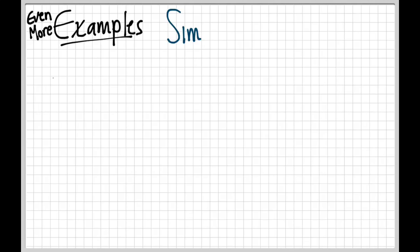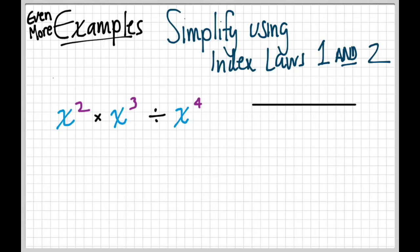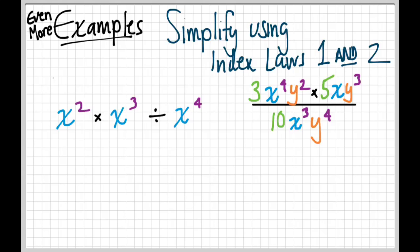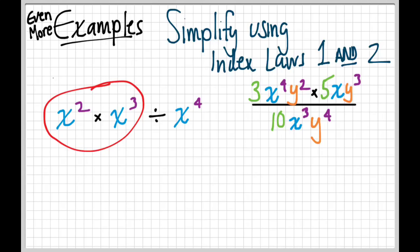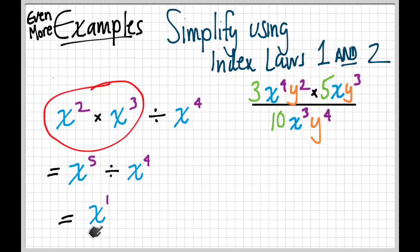One more set of examples — this time we'll combine index laws one and two. We have x squared times x cubed over x to the fourth. First, index law one: add the exponents in the numerator — two plus three is five, giving x to the fifth. Then index law two: x to the fifth divided by x to the fourth — five minus four is one, giving x to the one, which is just x.